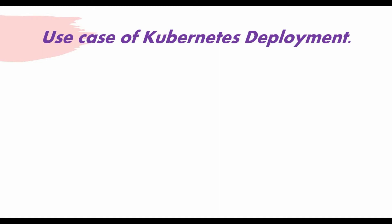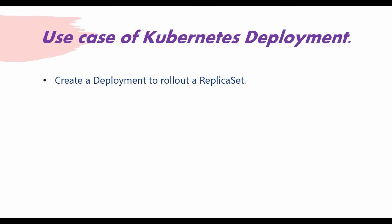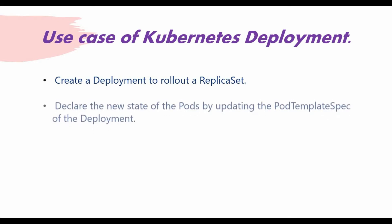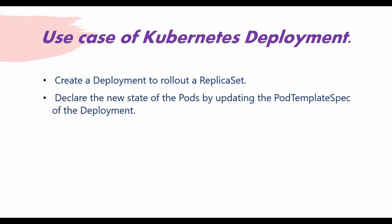Before writing the manifest file, let me show some use cases of Kubernetes deployment. First, you use deployment to create and roll out a replica set. Also, in deployment you declare the next new state of pods by updating the pod template specification in the manifest file.